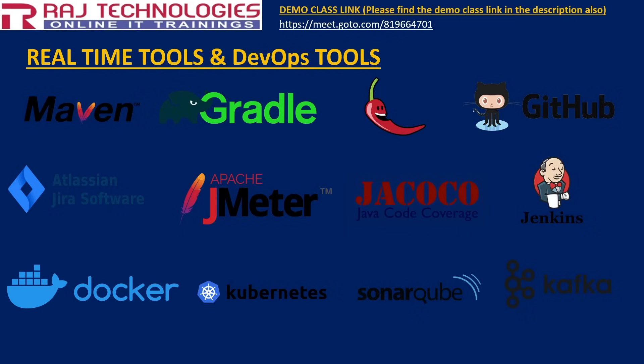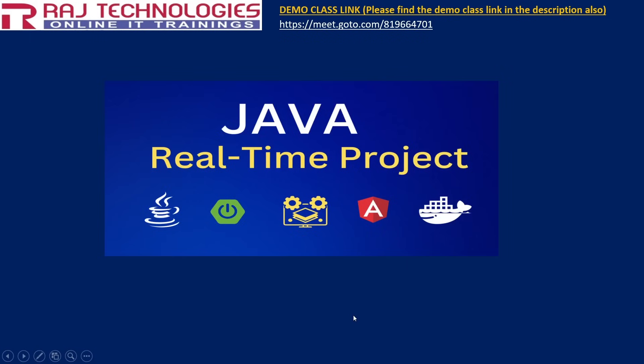We are going to discuss SonarQube, Apache Kafka, and some more tools which will be added to the course. Once we complete all the concepts, we'll work on two mini projects and two major projects — the backend developed using Spring Boot and the frontend using Angular.